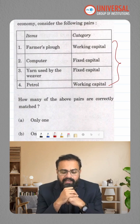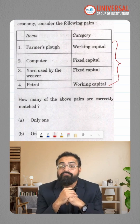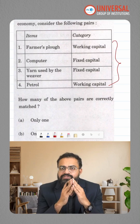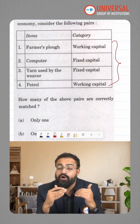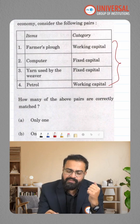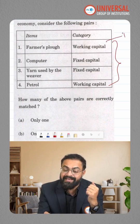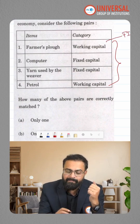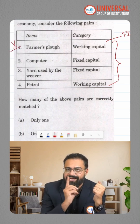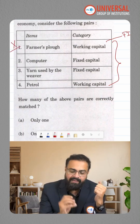So now we know very clearly the farmer's plough, that happens to be the fixed capital, something which has a longer duration, the longer life as well. So the farmer's plough happens to be a fixed capital, not the working capital. So this is not correctly matched. Computer is a fixed capital? Yes.